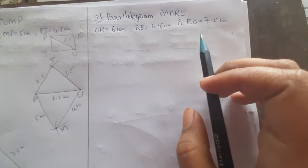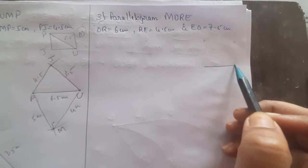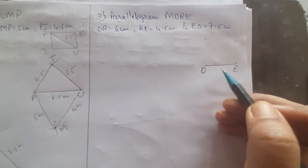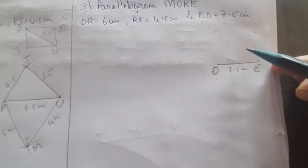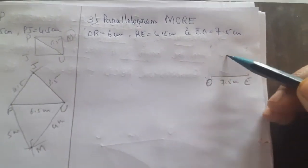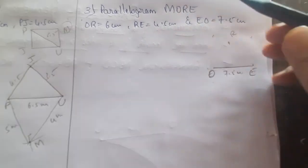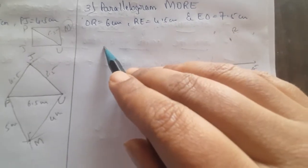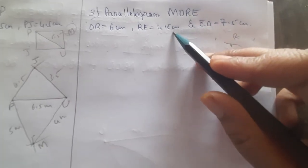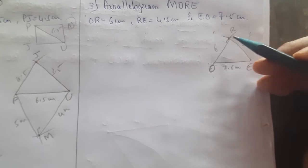So we shall draw the rough sketch now. E-O is the diagonal, so first construct the triangle keeping the diagonal as the base. I will draw O-E which is 7.5 cm. From O I can mark vertex R since O-R is 6 cm, and from E to R I know R-E is 4.5 cm. With the compass, measure 6 cm and cut an arc, then measure 4.5 cm and cut an arc and join. This is 6 cm, this is 4.5 cm - hence we got the triangle.